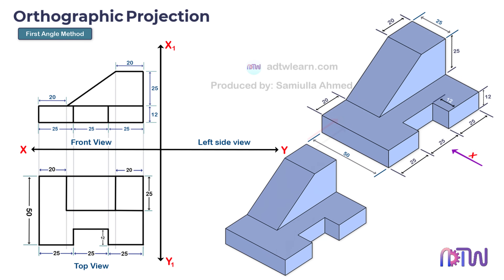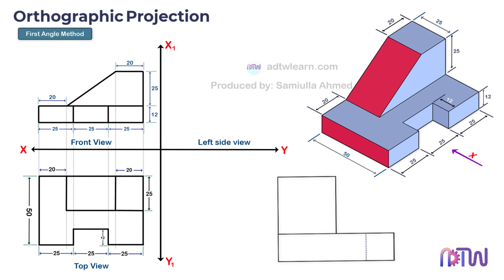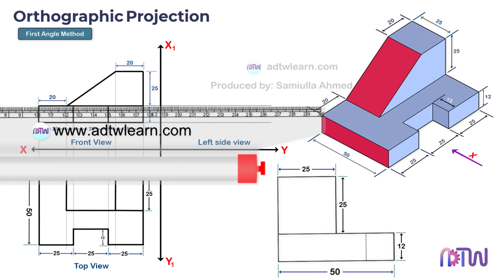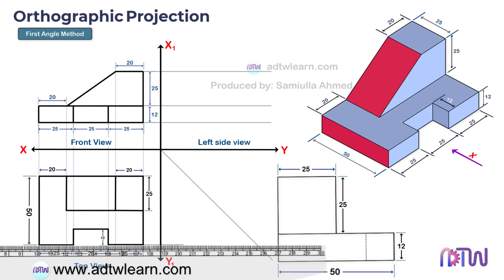At last, we need to draw the left side view of the object. When we see the object from the left side, this is how it will look. This length is 50 millimeters, this height is 12 millimeters, the next height is 25 millimeters, and this width is 25 millimeters. First, draw the horizontal projection lines from the front view of the object. Also draw the projection lines from the top view — to do so, first draw an inclined line at 45 degrees, then draw the projection lines from the top view and extend these lines up to the inclined line.